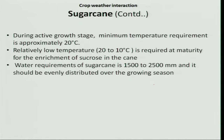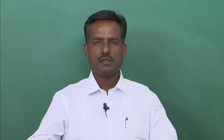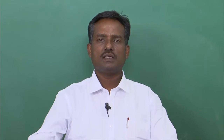During the maturity phase, sugar cane requires cool night hours as well as warm daytime temperature. A relatively low temperature range of 10 to 20 degree Celsius is required at the end of the season for better ripening. Let us see the water requirement of the sugar cane crop.